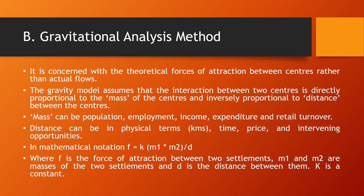Distance can be measured in kilometers, time, price, or intervening opportunities. Mass and distance are the two key factors in gravity. The mathematical formula is expressed as: F equals k multiplied by m1 multiplied by m2, the whole divided by d. Here F is the force of attraction between two settlements, k is a constant, m1 is the mass of settlement one, m2 is the mass of settlement two, and d is the distance between them.